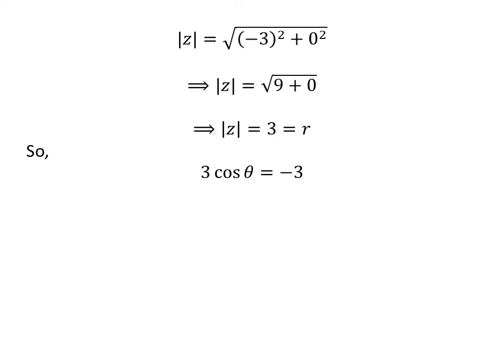As we know, r times cosine of theta is equal to minus 3, so 3 times cosine of theta is equal to minus 3.